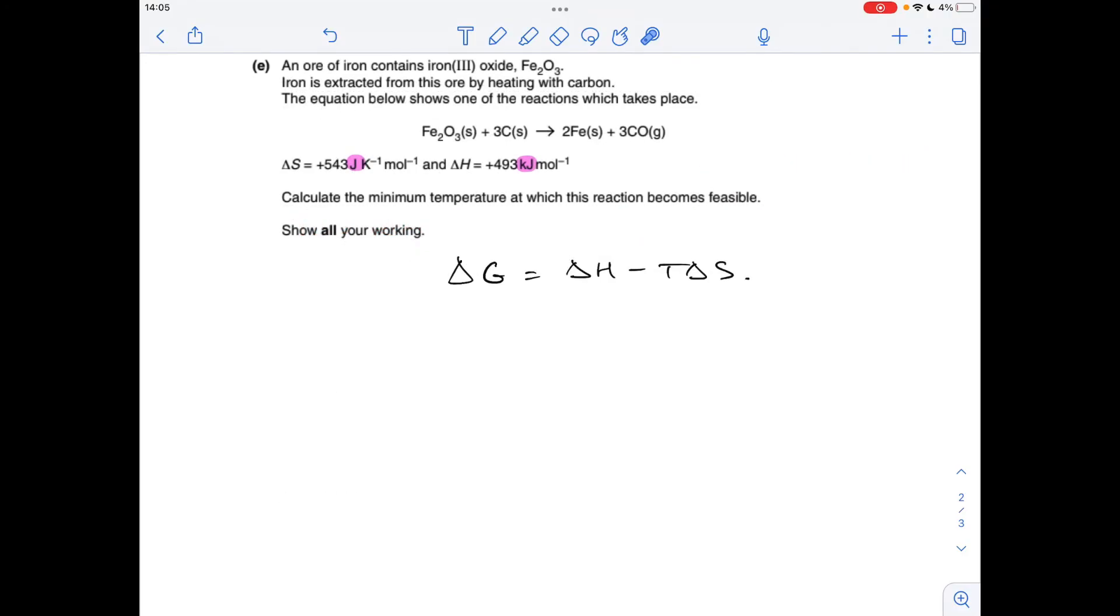So moving on to part E, we've got to calculate the minimum temperature at which the reaction becomes feasible. So essentially, we've got to find the temperature that makes ΔG equal to zero. So there's the derivation of T. You wouldn't have to do that in the exam. You could just remember that equation there. So to get the temperature at which ΔG equals zero, it's ΔH over ΔS.